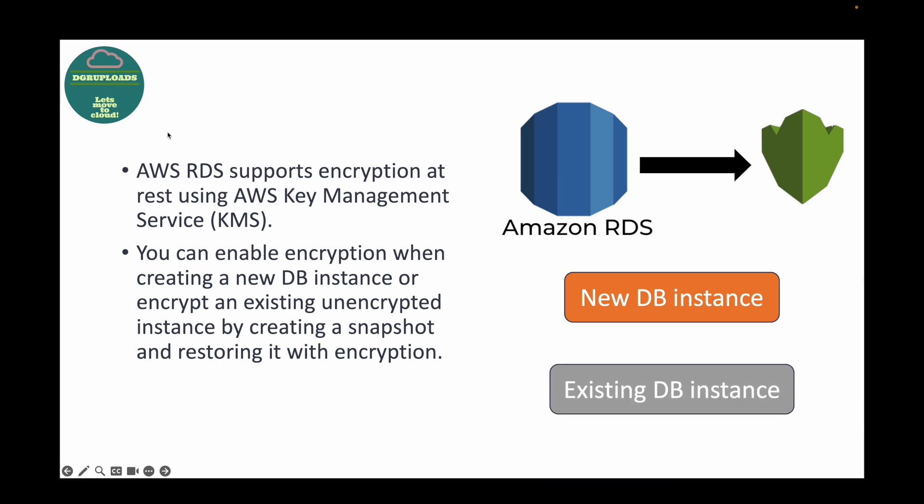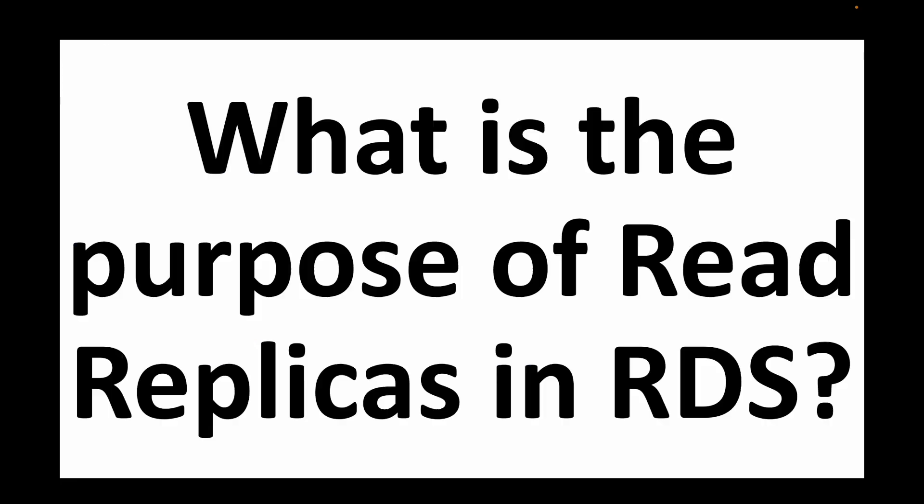If you have an existing DB instance, then you need to first create a snapshot and then restore that snapshot — essentially launch a new DB with encryption enabled. So there are two options: you can either enable encryption when launching the DB, or if you have an existing DB you can do it via the snapshot-and-restore workaround.